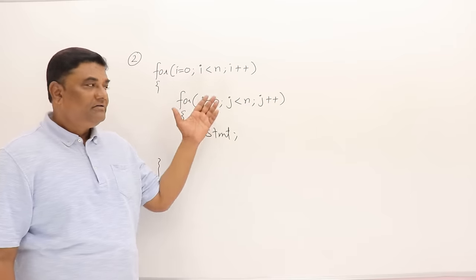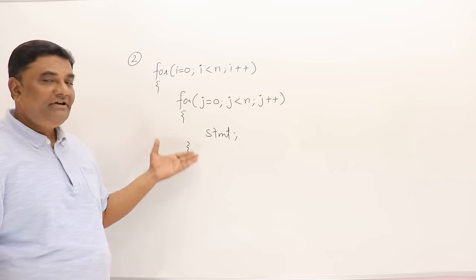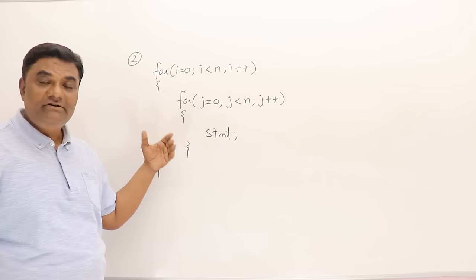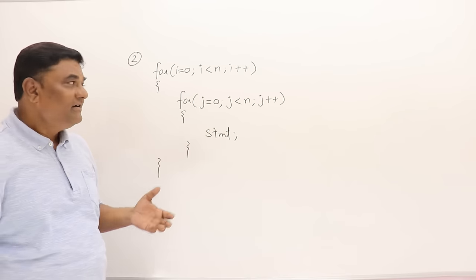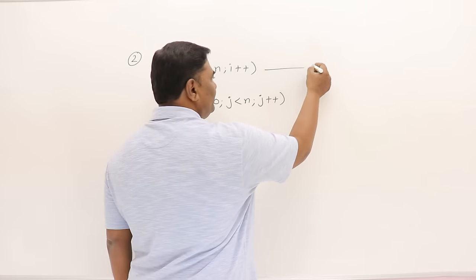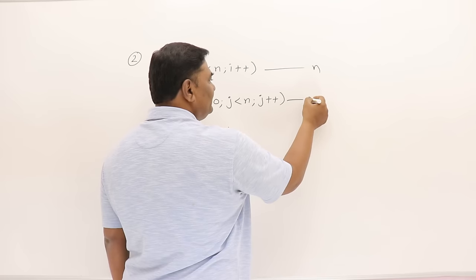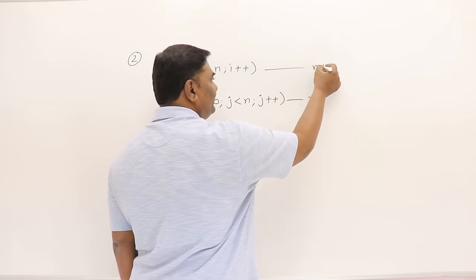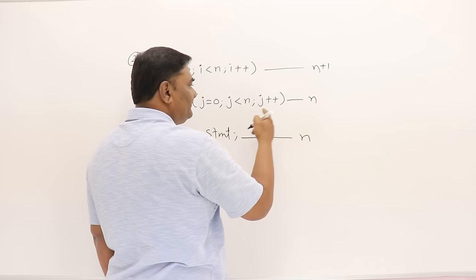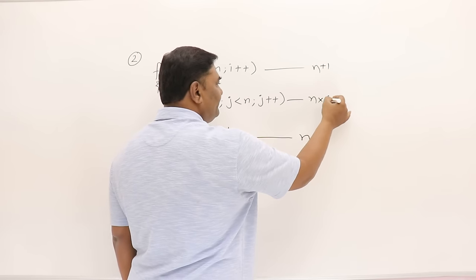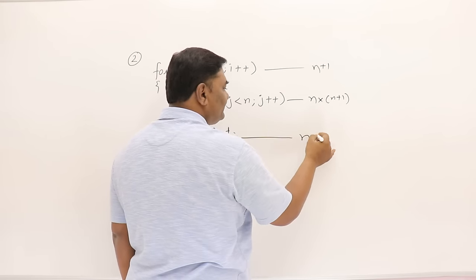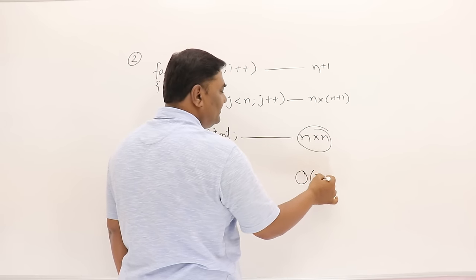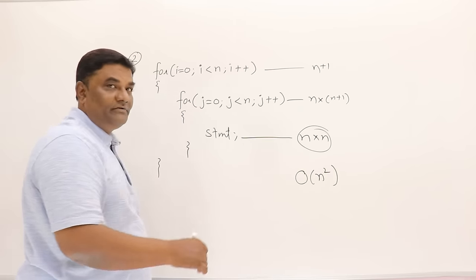No matter what the increment is, n divided by anything — the number of times the statement executes scales linearly, so the time complexity remains O(n). Next, we have two nested loops, one inside another. The outer loop executes n times and the inner loop also executes n times, so this gives O(n²).